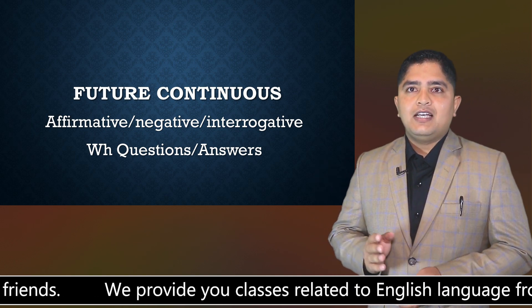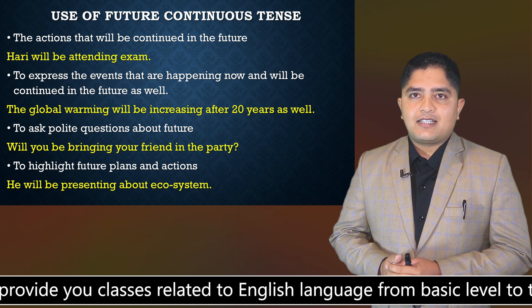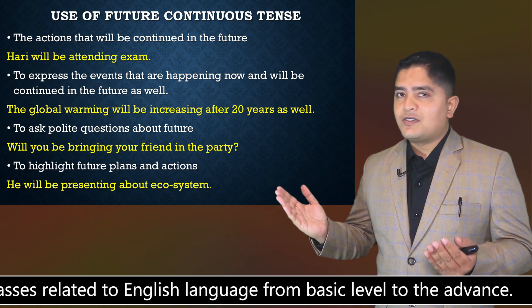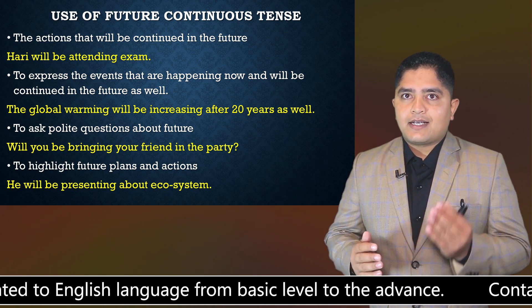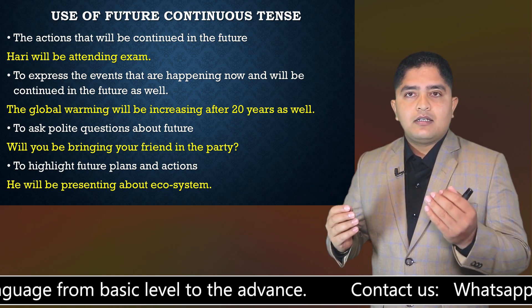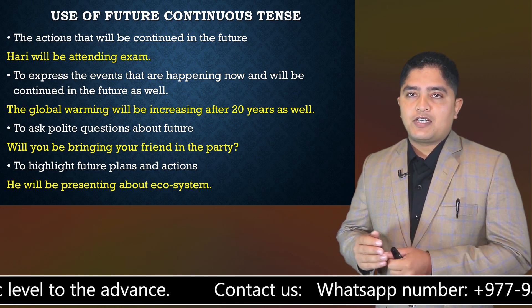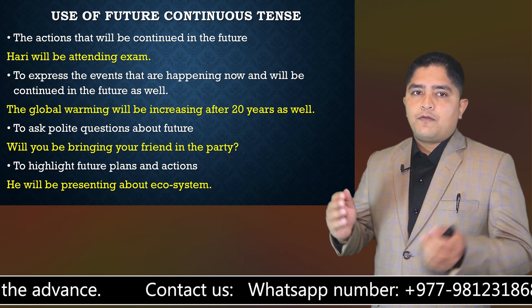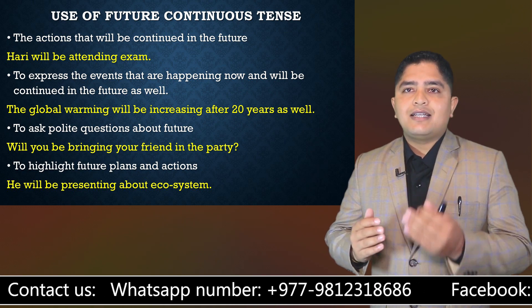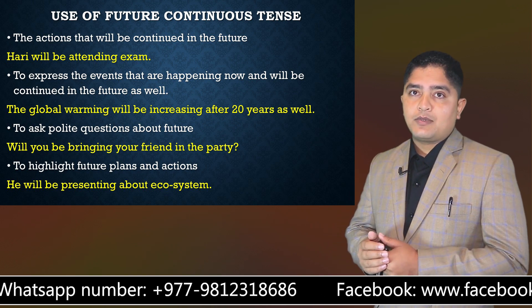Let's go to the video and know the rules first. Future continuous tense is used in a few situations and conditions. The first rule says: actions that will be continued in the future. For example, 'Hari will be attending the exam' — meaning Hari will be in the process of attending the exam.